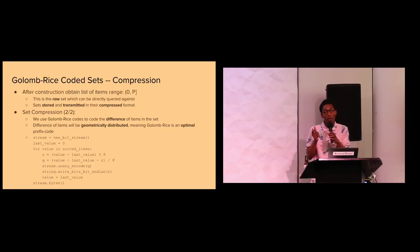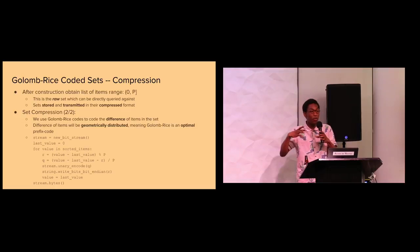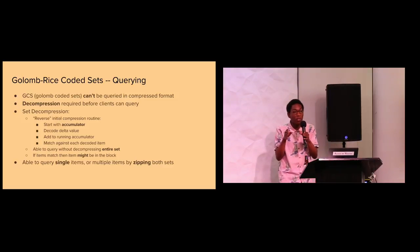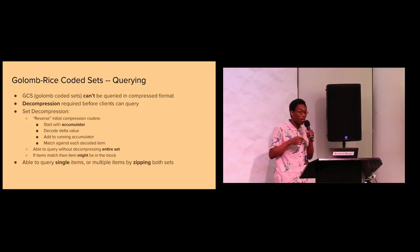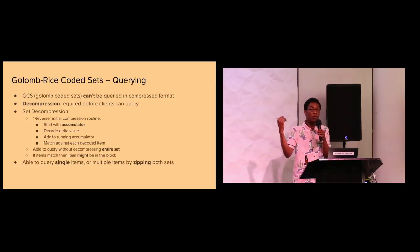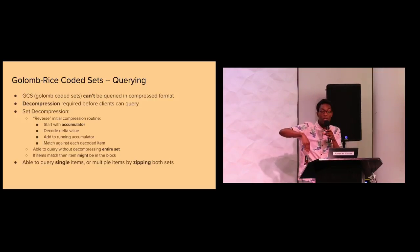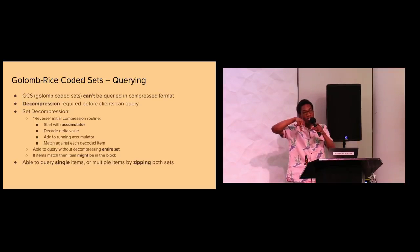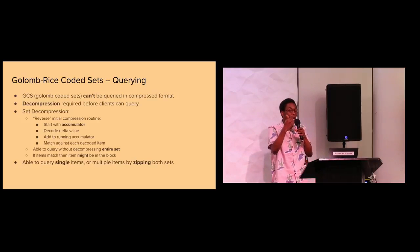Unlike bloom filters, Golomb-Rice Coded Sets can't be queried natively or modified — you need to decompress the set to query it. We do the reverse of construction: walk through the set, get the current value, add it to the accumulator to get an item, query against that item to see if it matches, and continue. This lets you query the set incrementally without decompressing the entire thing, which is more memory efficient. You can query a single item by walking down the set, or query a set of items by hashing them with SipHash and using a fast-and-slow pointer approach to see if anything matches.